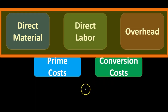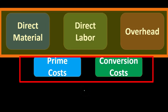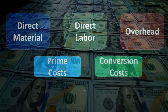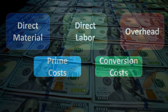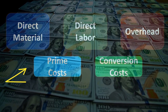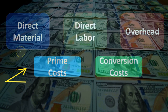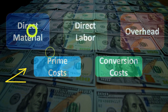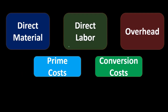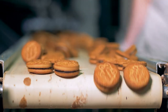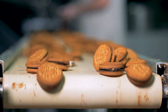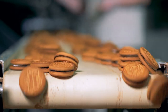When we consider these in terms of prime costs and conversion costs, there is a bit of an overlap. Prime costs represent what is going to be directly within the product. Therefore, prime costs include the direct materials and the direct labor. Direct labor can't really be seen within the product like direct materials can, but it's so closely associated to the product and so essential to production that we call those the prime costs.